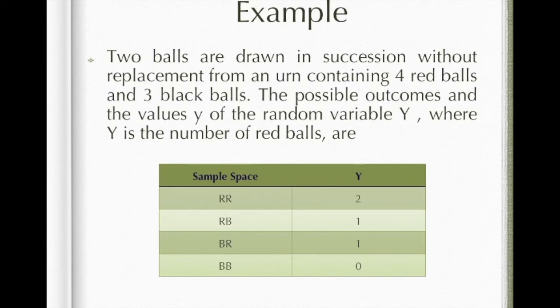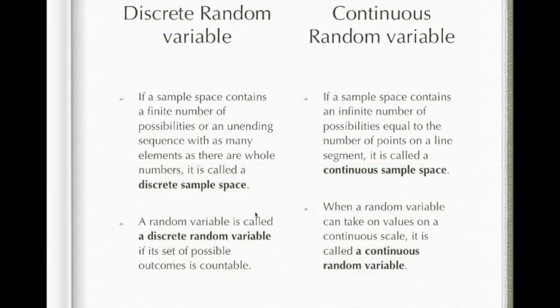The value Y of the random variable, denoted as capital Y, is the number of red balls: 2 red balls, 1 red ball, or 0 red balls. These values represent the value of the random variable. So this is the concept of discrete random variable.